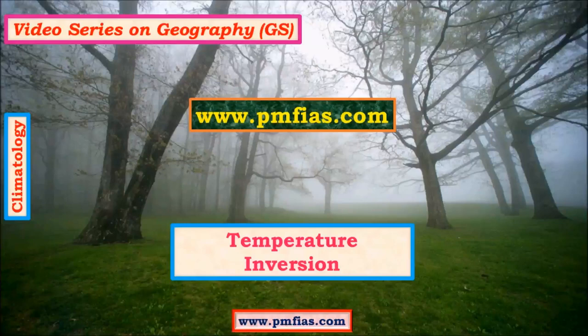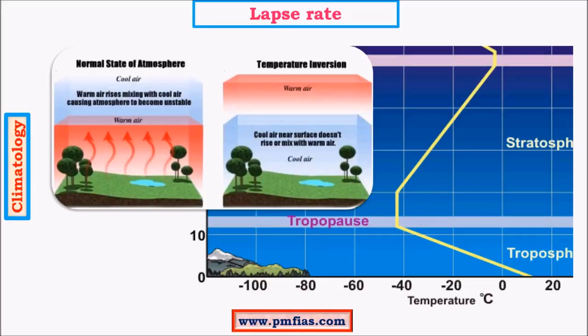Hello friends, welcome to this video series on geography. In this video I'll be explaining about temperature inversion. Temperature inversion is a phenomenon in which a colder air mass is overlaid by a warmer air mass, which is in contrast to normal conditions where a warmer air mass is overlaid by a colder air mass.